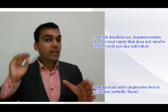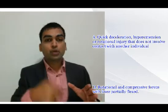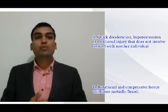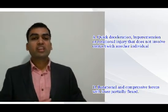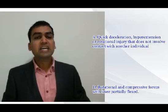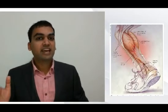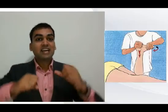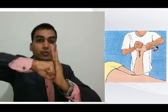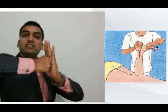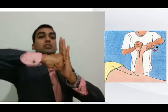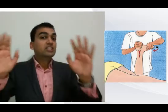Option D describes rotational and compressive forces. Whenever you see compressive forces combined with rotation, this directly points to a mechanism of meniscus injury. Recall the Apley's grind test — we apply a compressive force and then rotate. If you internally rotate the tibia, a torn meniscus gives a positive result; external rotation also gives a positive result. So compressive plus rotational forces indicate meniscus injury, not ACL. Option D is excluded.